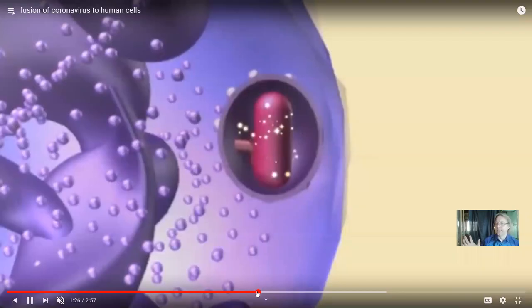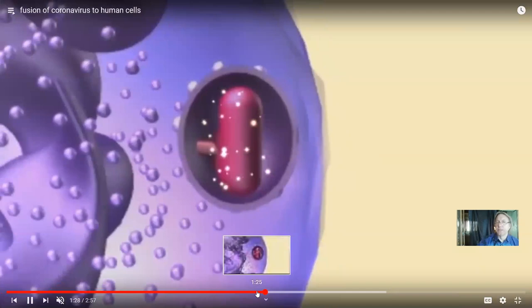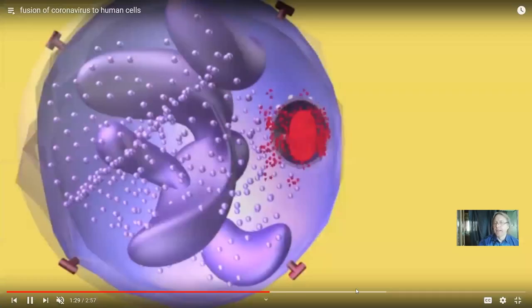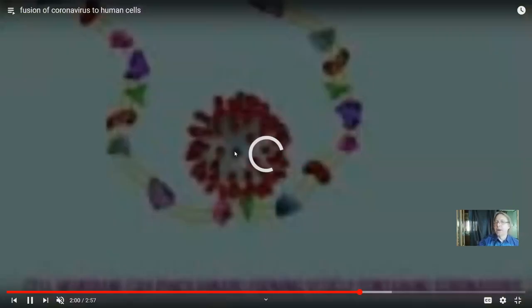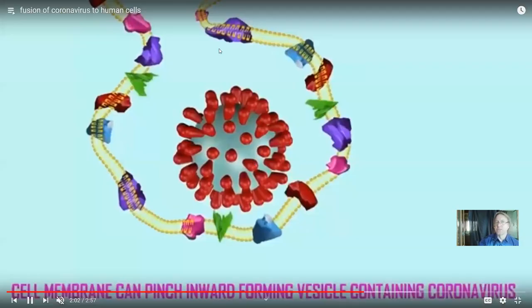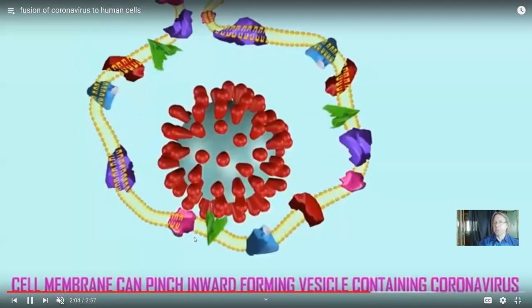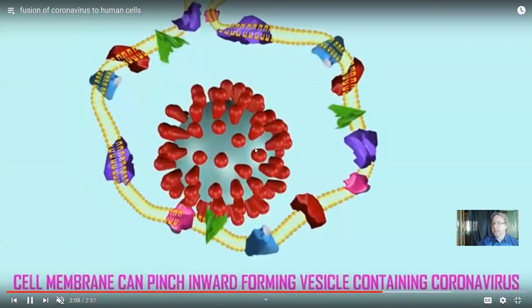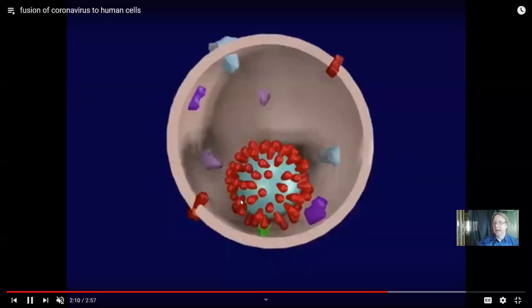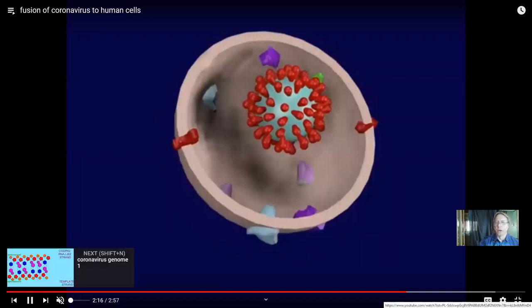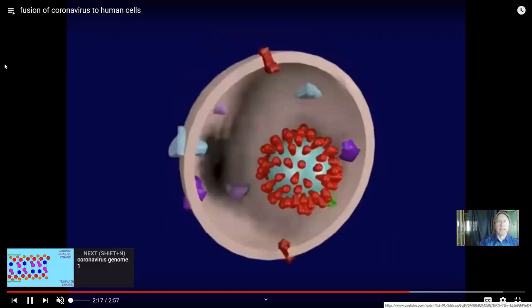So, the cell says, aha, I'm going to take this into myself. I'm going to make a little membrane bag. Cells can do that and eat bacteria, for example. But apparently with coronavirus, that's what it wants. It wants the human cell membrane to engulf it and bring it inside the cell. And as this then becomes more acidic, the human cell thinks it's now going to make it acidic and break this down. That's actually a trigger for the virus.